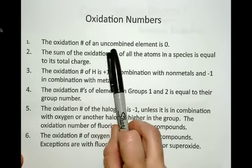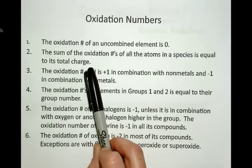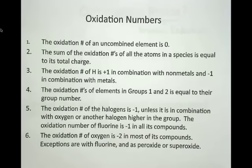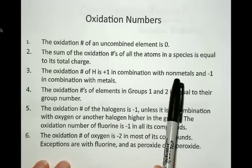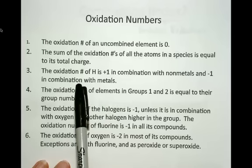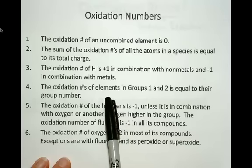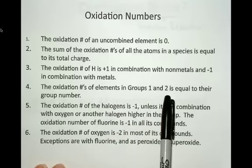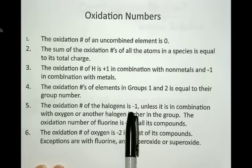So: the oxidation number of an uncombined element is zero. The sum of the oxidation numbers of all the atoms in a species is equal to the total charge. For example, in magnesium oxide, the total charge is zero, so the sum of the oxidation numbers — plus two and minus two — is zero as well. The oxidation number of hydrogen is always plus one in combination with nonmetals, and always minus one in combination with metals. The oxidation numbers of elements in groups one and two equal their group number, which is the same as their charge.